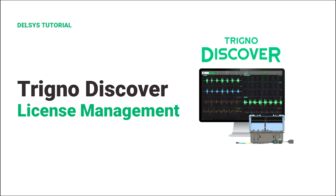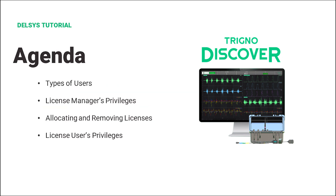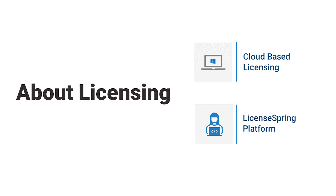Welcome to the Delsys tutorial on how to manage your Trino Discover license through the LicenseSpring platform. This tutorial will cover the types of users within your license and how you can allocate and remove your license for other users. Trino Discover is a licensed software platform from Delsys. It uses a cloud-based licensing system from LicenseSpring, allowing you to manage your license and registered devices online. If you are looking to activate your Trino Discover license, please watch our Trino Discover Getting Started video to learn more.